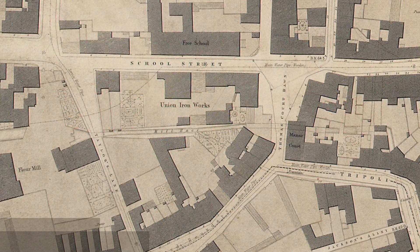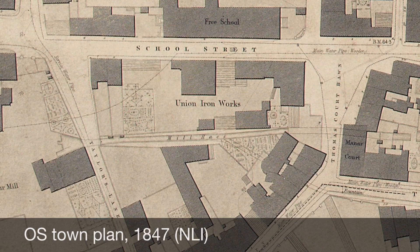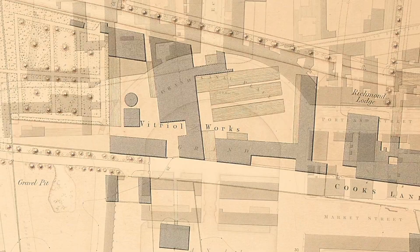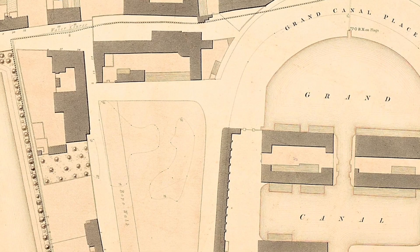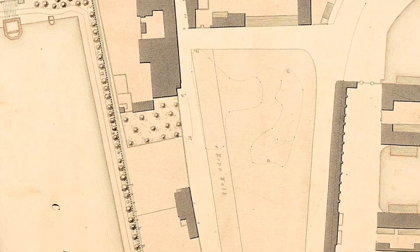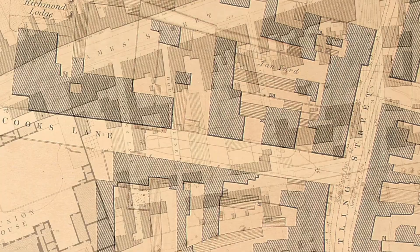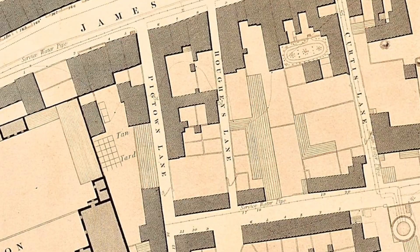Other large industrial premises of note on the map include James Haig's foundry at Ardee Street, the Union Iron Works at School Street, and the large Vitriol works at Cook's Lane off Watling Street. The map also gives subtle clues to other industrial activities, with rope walks depicted at Brown Street and Grand Canal Harbour — the latter becoming the present-day Brandon Terrace. Tan yards abound in this area in the 19th century, not always shown on the map; however, those on Cook Street, Watling Street and Pig Town Lane are depicted — the latter name inspired no doubt by the presence of the yard.